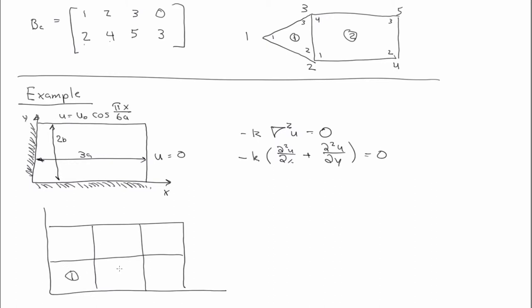So we're going to have 1, 2, 3, 4, 5, 6. With global node numbers, 1, 2, 3, 4, 5, 6, 7, 8, 9, 10, 11, and 12.